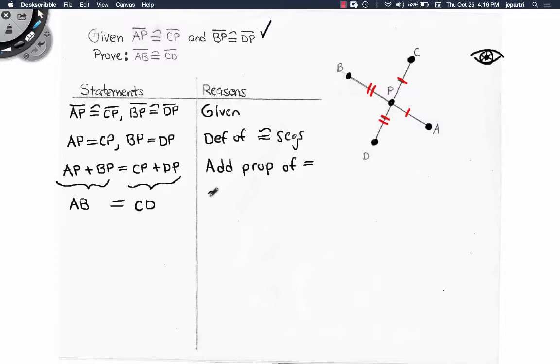So what I just did right there was I used the segment addition postulate. I added two smaller segments to get a larger segment. Well, if these two things are equal, these segments, then they must be congruent. And so that, again, is the definition of congruent segments.